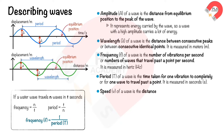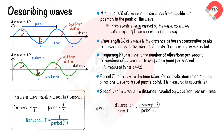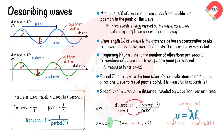Speed, v, of a wave is the distance travelled by the wavefront per unit time, measured in meters per second. If the distance travelled is one wavelength, the time taken is one period. Since 1 over period equals frequency, then speed equals wavelength times frequency.